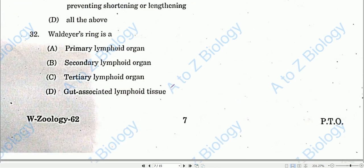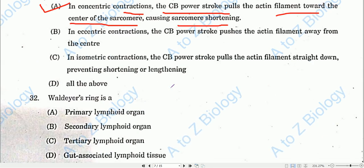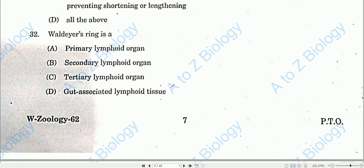Question number thirty-two: Waldeyer's ring is a kind of gut-associated lymphoid tissue. Option D will be the correct one. Question number thirty-three: Phylogenetically, the oldest antibody is IgM. Option A will be the correct one.